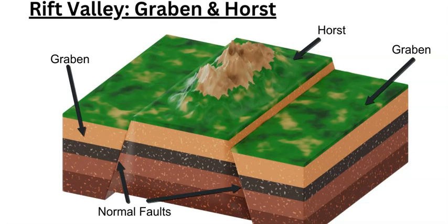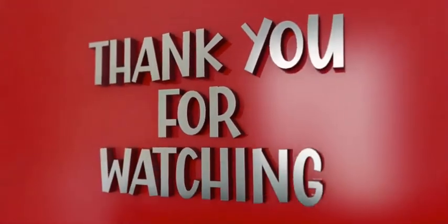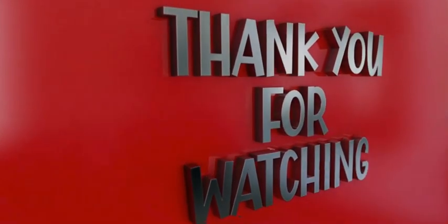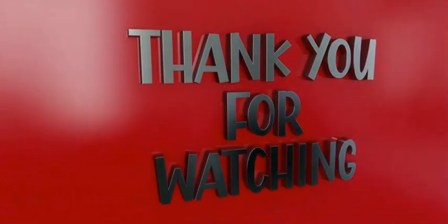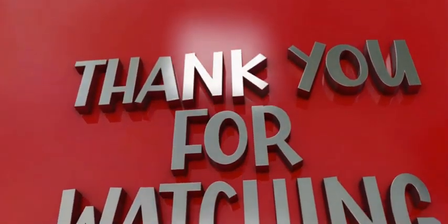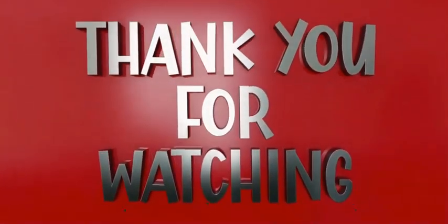These two features — the graben and the horst — are very common in rift valley locations and processes, where the graben slides down along the normal fault and the horst is squeezed up to form a higher peak in the landscape. Thank you for watching. If you enjoyed it, please subscribe and hit the like button, and check out my channel for more earth science videos.